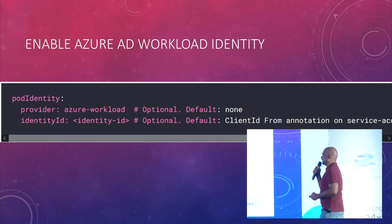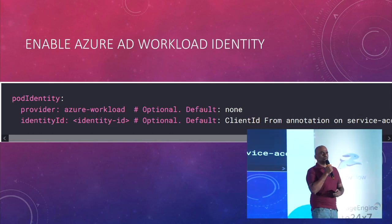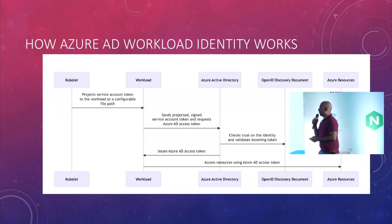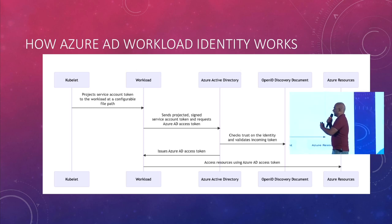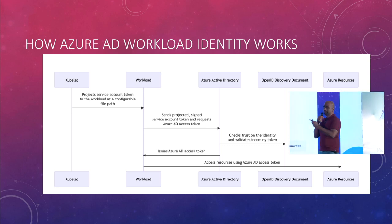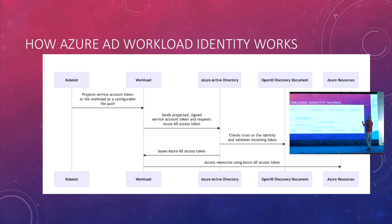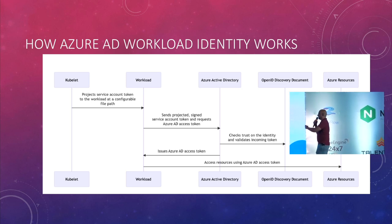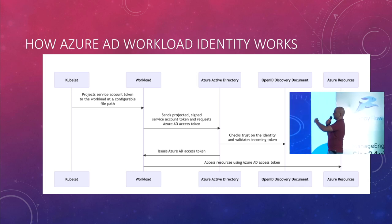How does Azure AD Workload Identity work? I'll show you the code — you only need to write two lines of code. When the Kubelet wants to connect to a workload, it requests a service account token. Once the service token is obtained, it is authenticated by Azure AD. The OpenID Connect discovery document validates it, and the workload gets access to the Azure resource.